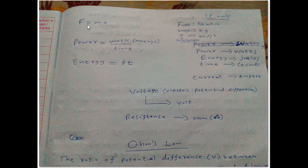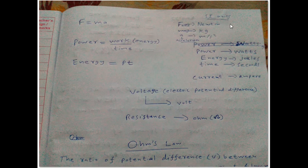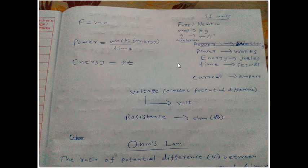The basic formula you need to know is F = ma, where F is force, M is mass, and A is acceleration. The SI unit of force is Newton (N). The SI unit of mass is kg, and the SI unit of acceleration is meter per second squared. BSNL usually asks a few SI unit questions — for example, what is the SI unit of force, mass, acceleration, or resistance.